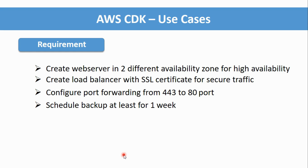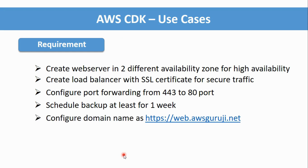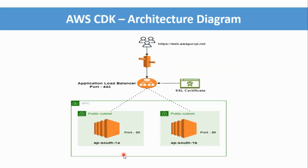We will configure routing from port 443 to port 80, define daily backups with at least one week retention period for recovery purposes, and map a domain name — in this case web.awsguriji.net. I have created an architecture diagram for this requirement.